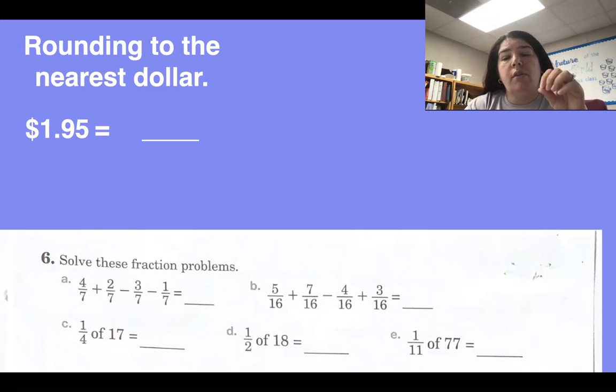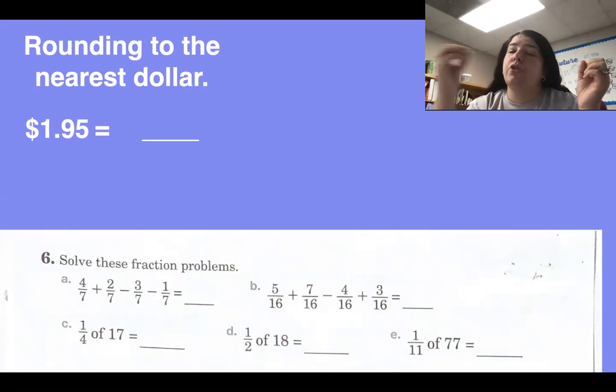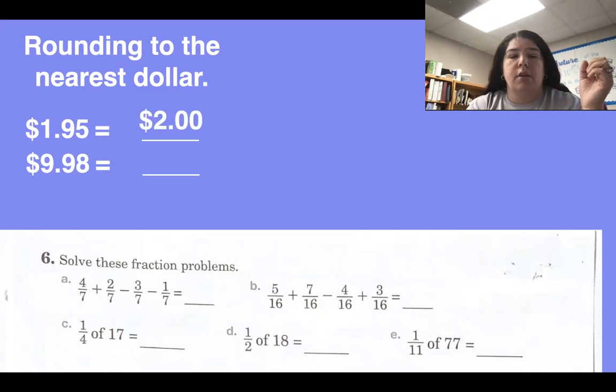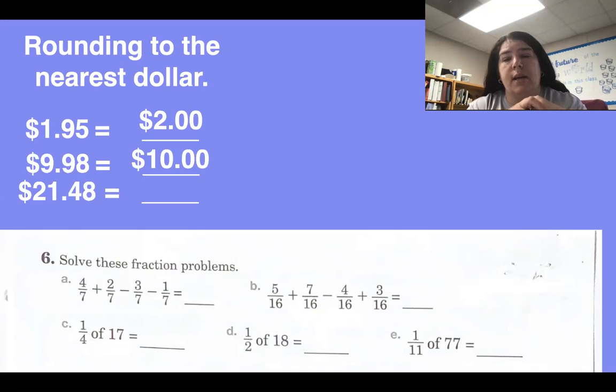So we need to remember that 9 is above, so we're going to go up. So is $1.95 closer to $1 or closer to $2? $2 is correct. How about $9.98? Is it closer to $9 or closer to $10? It's $10. And the last one, $21.48. Is that closer to $21 or $22? Now, this is a little bit more tricky, because you're looking at the ones column, that's a number one, but then you're going to go back and look to the four, which is in the tenths column, and four and below, we round down. So is it $21 or $22? $21 is correct. Very good.